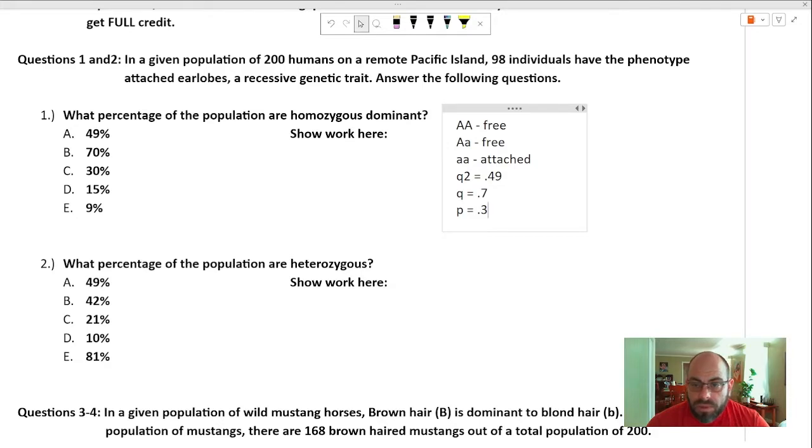What percentage of the population is homozygous dominant? Well, that is p squared. p squared is .3 times .3, which is .09. E is the correct answer.